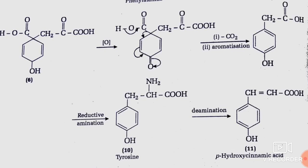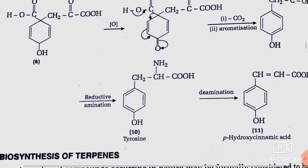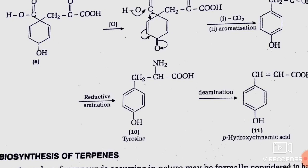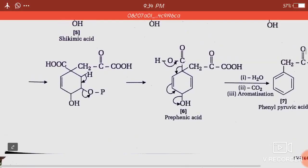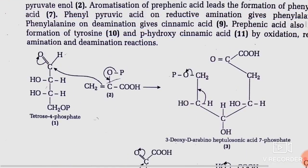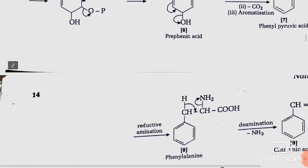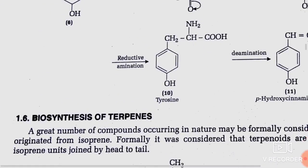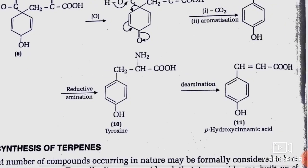So, keeping the whole reaction mechanism in mind: the formation of benzene nucleus starts here. Starting from tetrose, which is a 4-carbon atom, treated with phosphoenol pyruvate, followed by cyclization, decarboxylation, deamination, oxidation, reduction, and aromatization, there is finally the formation of aromatic nucleus. This is the origin of aromatic rings.